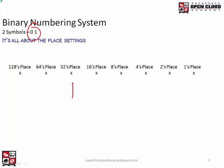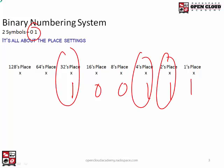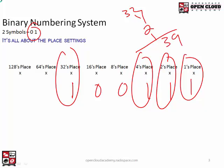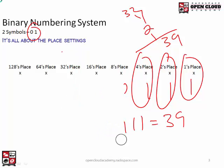Let's do another quantity. We have 32 plus 4 plus 2 plus 1. That's 36, plus 1 is 37, plus 2 is... actually 32 plus 4 is 36, plus 2 is 38, plus 1 is 39. So 1, 0, 0, 1, 1, 1 is the same as decimal 39. This is how we convert binary numbers to decimal numbers.